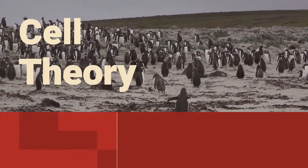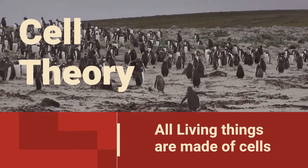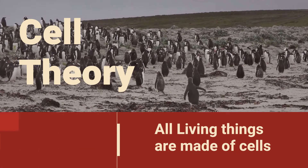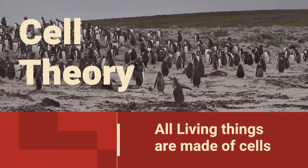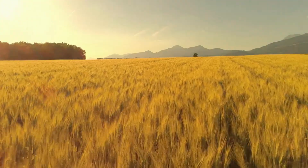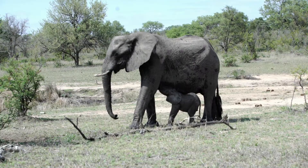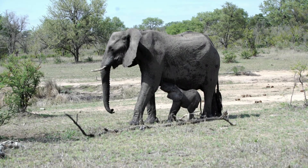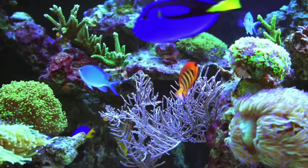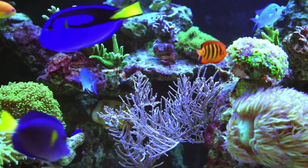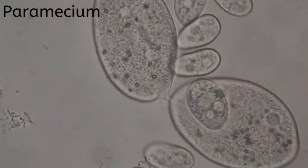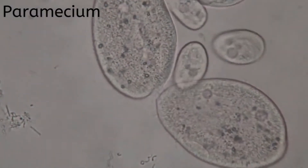The cell theory states that all living things are made of cells. If you take a look around, it is easy to see there is a huge variety of life on Earth, and each of these living organisms are made up of one or more cells.